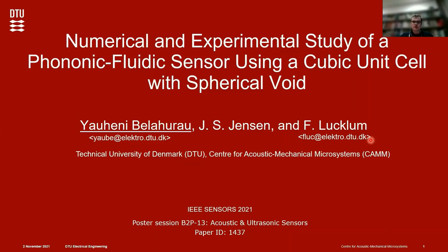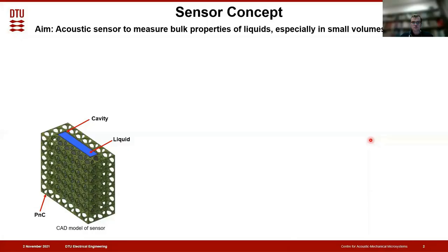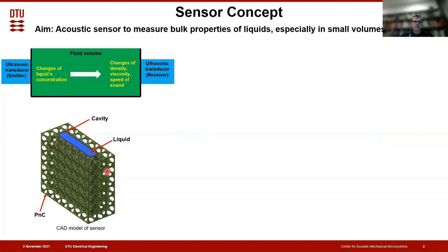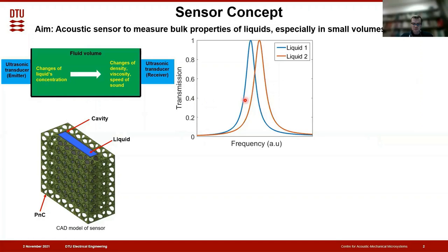This work is done under the supervision of Professor Frida Lukrum and former Professor Jakub's Artic Alliance. The object of our study is a phononic fluidic sensor to measure volumetric properties of fluid. Our sensor consists of a liquid-filled cavity, which is surrounded by a phononic crystal. In the liquid cavity, we excite a standing wave by the help of an ultrasonic emitter and receiver. Therefore, the shift of resonance frequency can be linked with material properties of the fluid. This can be illustrated by the following figure, where you can observe the sensor effect.